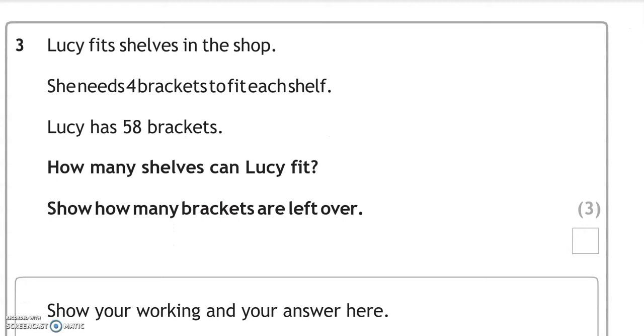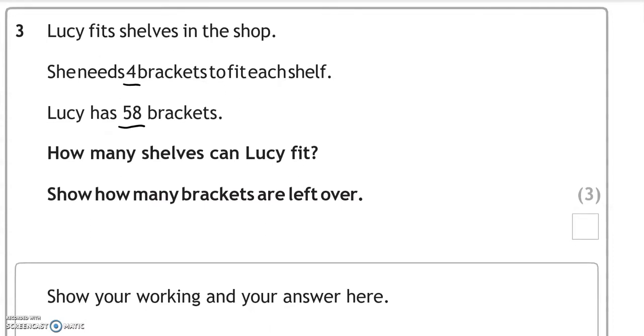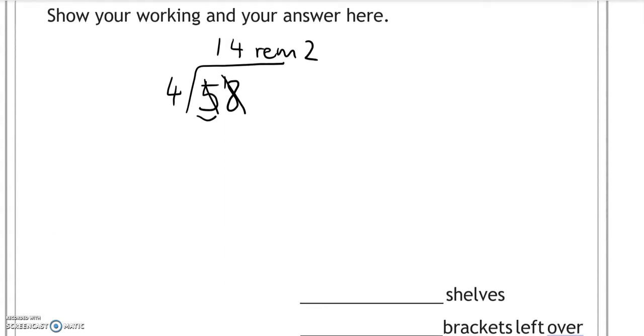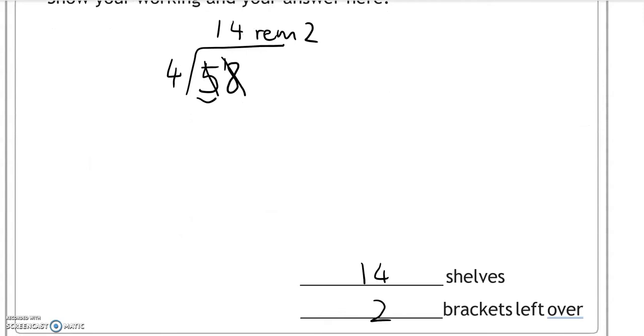Lucy fits shelves in the shop. She needs four brackets to fit each shelf. Lucy has 58 brackets. How many shelves can Lucy fit? Show how many brackets are left over. So 58 divided by 4. How many 4s fit into 5? That's 1, and 1 carried over. How many 4s into 18? That is 4, because 4 times 4 makes 16, and we've got 2 remaining. So we're going to say 14 and 2 brackets left over.